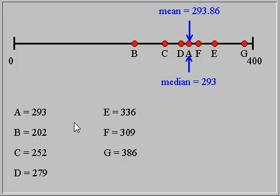We're looking at an interactive demonstration here to give us a sense of how different values affect the mean and the median. This is a number line, ranging from 0 to 400. Each of these red dots is a value, and those values are listed here below.